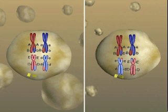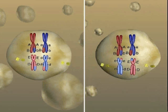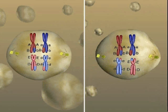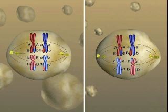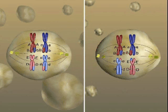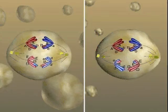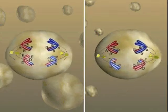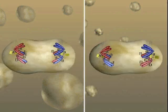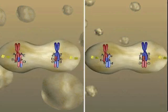During metaphase I of meiosis, the maternal and paternal chromosomes of one homologous pair align independently of the maternal and paternal chromosomes of the other homologous pairs. The orientation of homologs in two different cells undergoing meiosis is shown. Genes that are located on different chromosomes undergo independent assortment because of the random alignment of the maternal and paternal chromosomes.